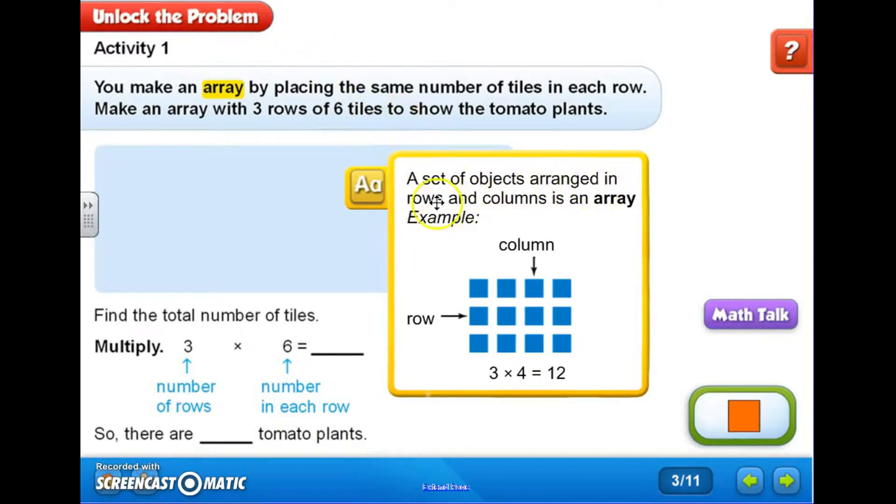Let's look at what an array is first. A set of objects arranged in rows and columns is an array. So this is an example right here, which is a picture of an array.